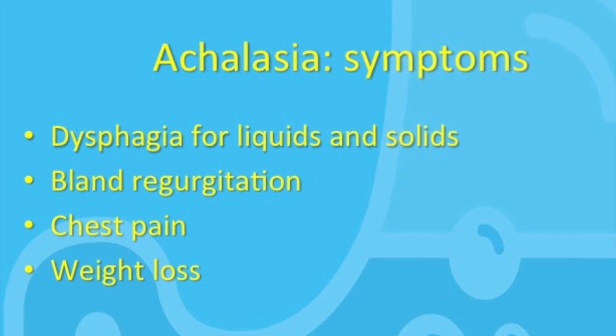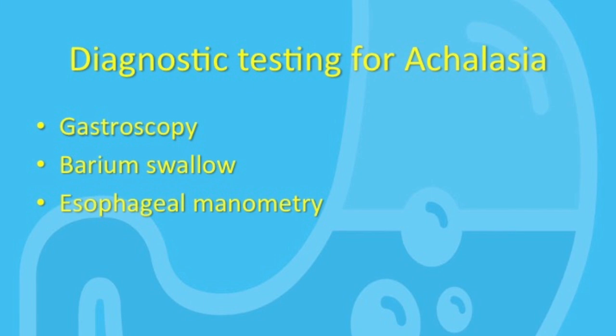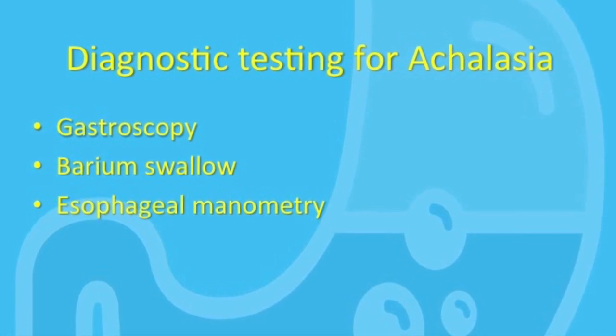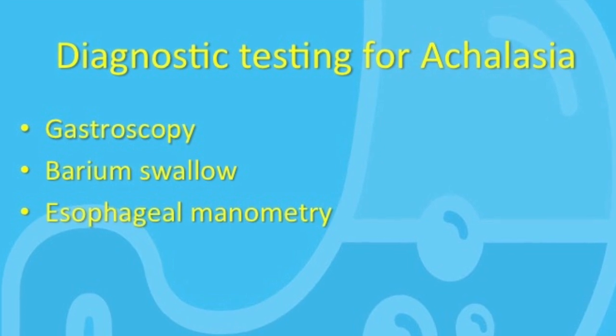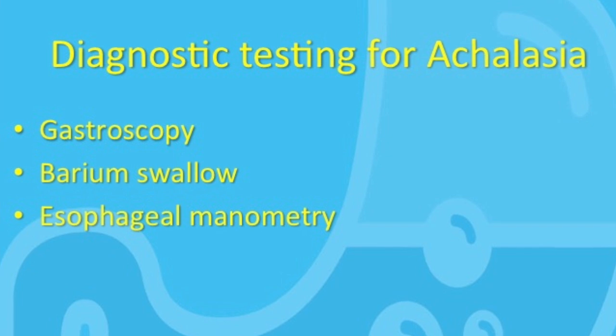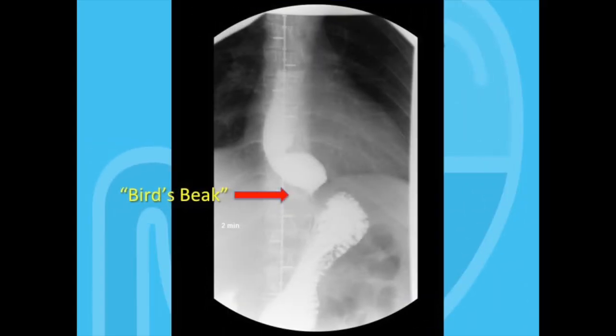How do we actually confirm the diagnosis? All patients with suspected achalasia must have a gastroscopy. This test helps to rule out pseudoachalasia, meaning other conditions that mimic achalasia. These can include a cancer at the GE junction, sarcoidosis, amyloidosis, Chagas disease, and a few other rare conditions. A barium swallow will often show a dilated esophagus that tapers into a so-called bird's beak, and there may also be retained food in the esophagus. However, a barium swallow can miss achalasia, especially in the early stages, as well as some of the conditions mentioned earlier. Bottom line: a barium swallow is helpful if it is suggestive of achalasia, but it does not replace a gastroscopy.